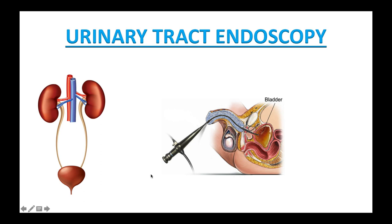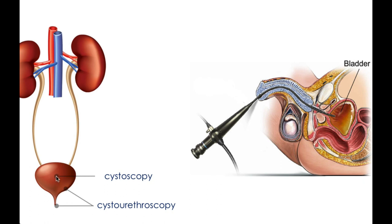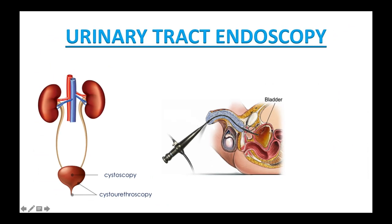Urinary tract endoscopy. If you watched my lesson about GI endoscopy, you should recognize this device. Basically, an endoscopic device consists of flexible tubing that contains a series of lights, mirrors, lenses, and optic fibers. These instruments transmit images around corners and twisted bends, allowing direct visualization of body systems not easily visualized by other means. A cystoscopy or cystourethroscopy is an examination of the urinary bladder and urethra. The doctor uses a cystoscope — a long, thin instrument with a tiny lens and light on the end — inserted into the bladder via the urethra. The small lens magnifies the inner lining of the urethra and the bladder, allowing the doctor to see inside.